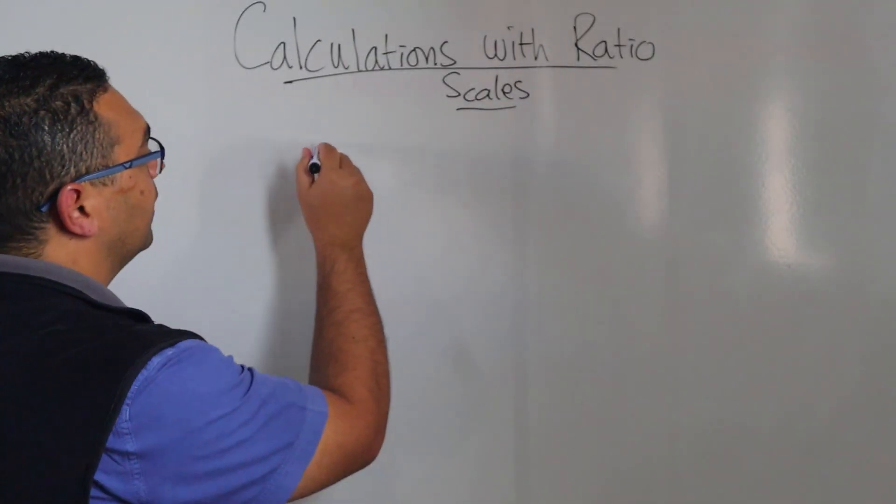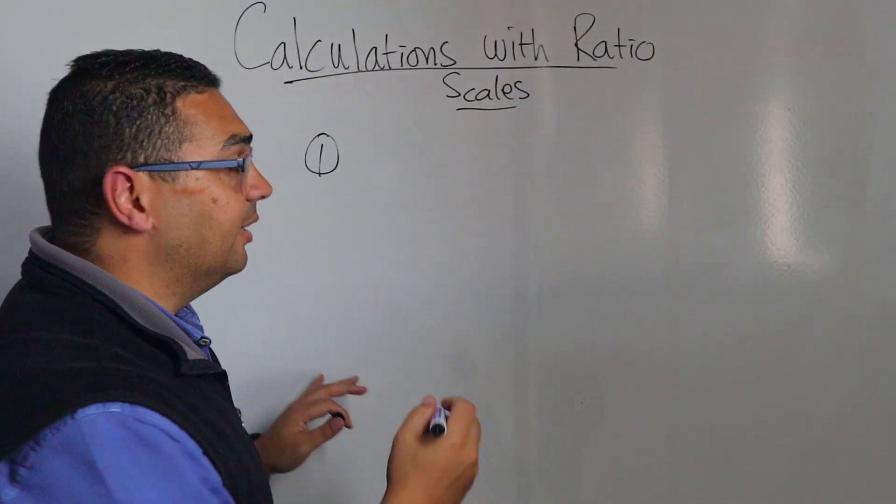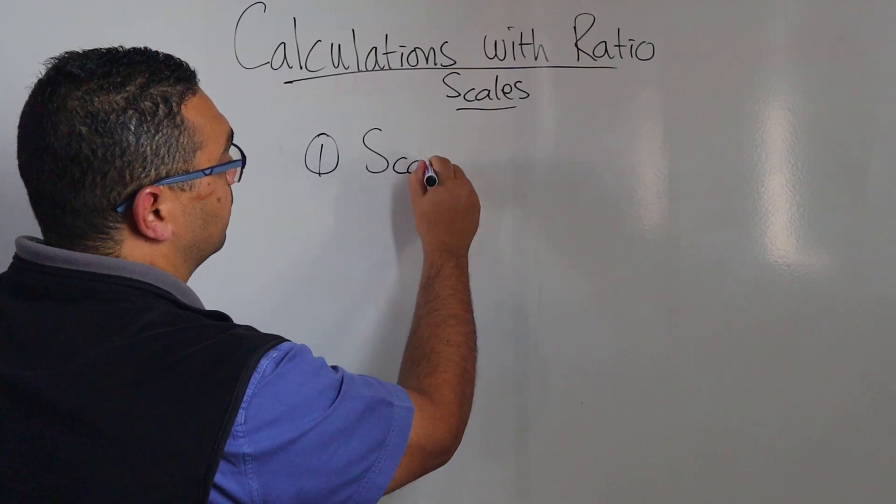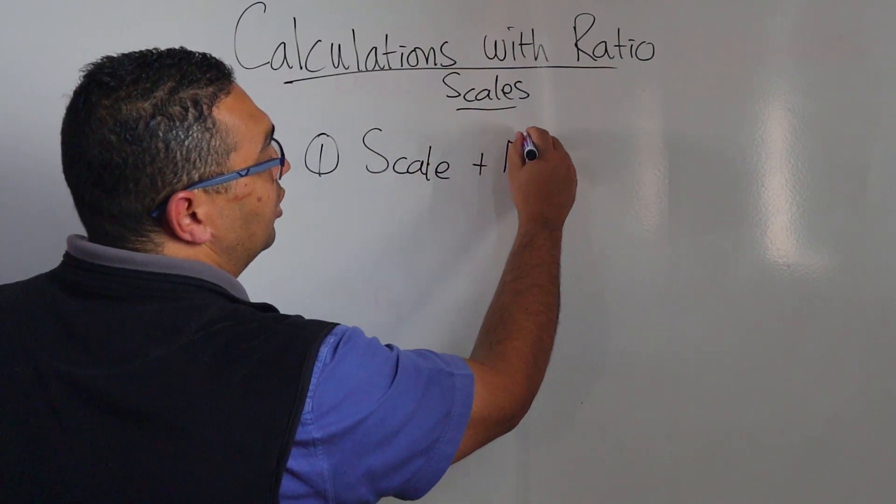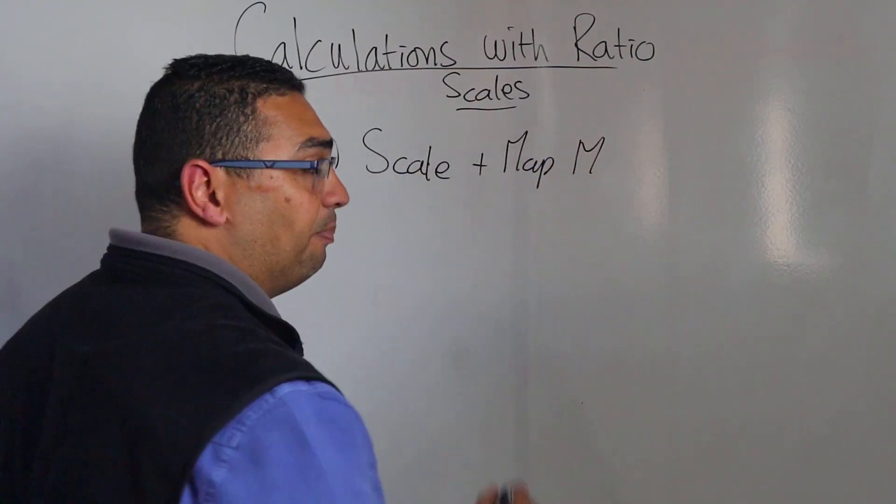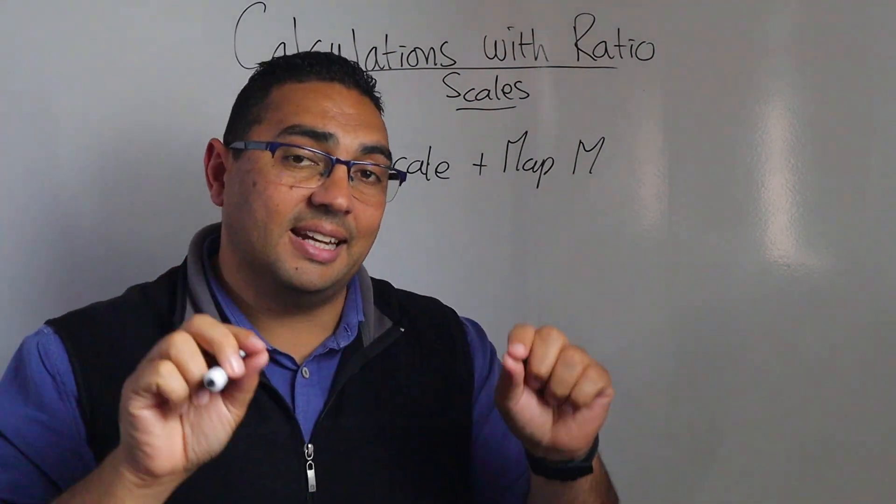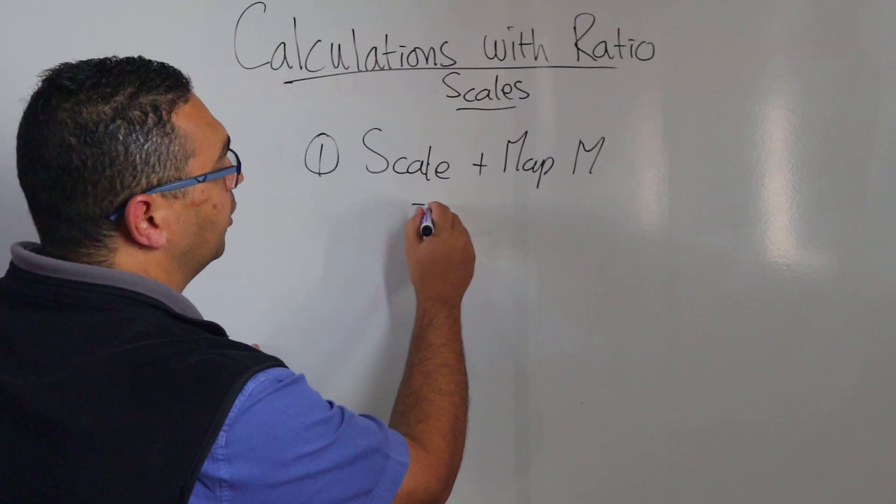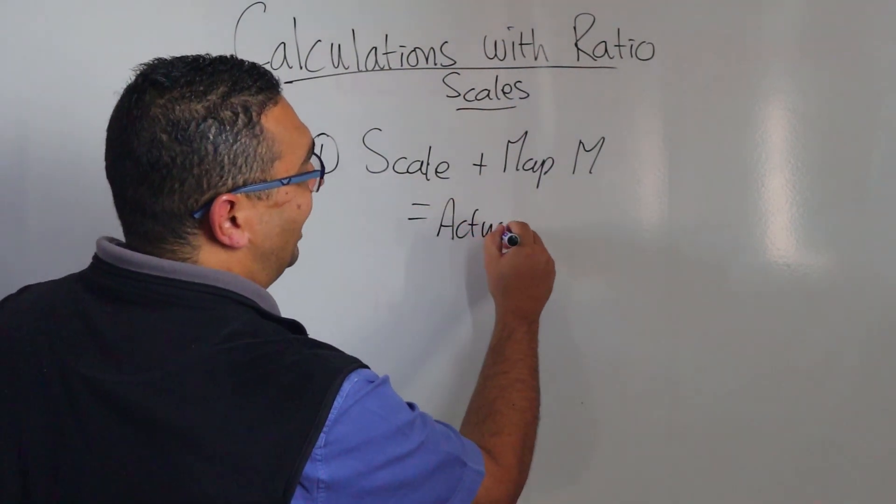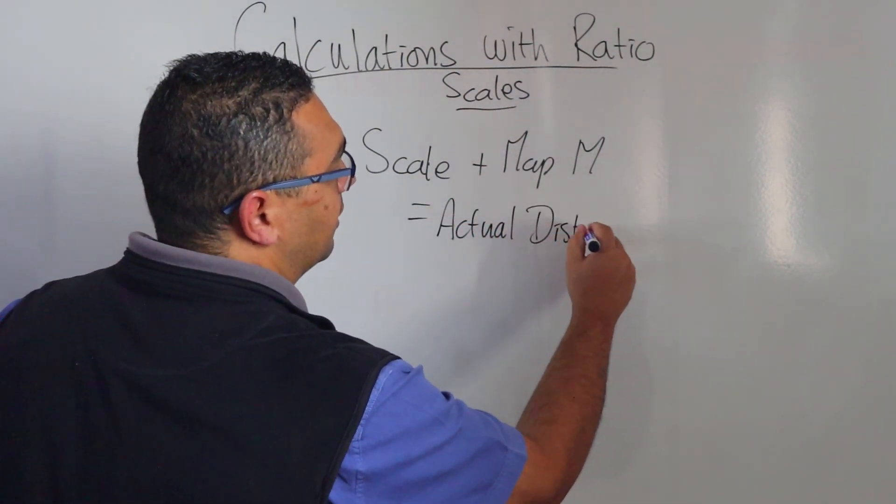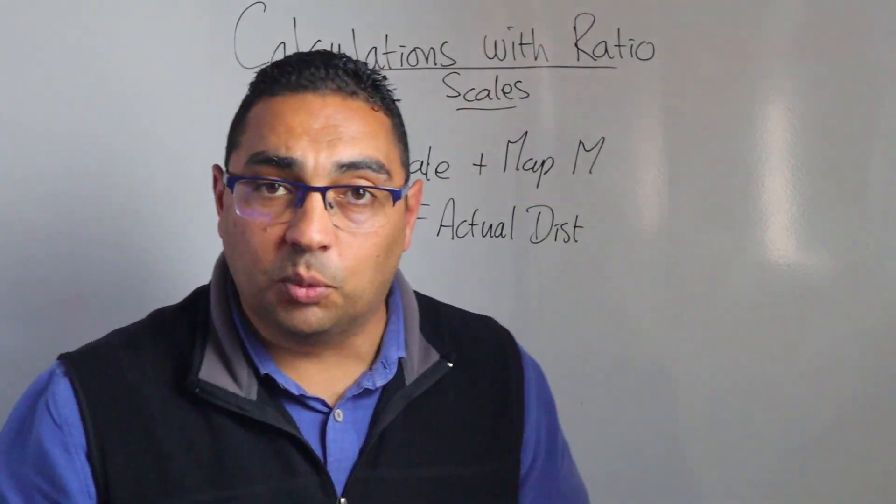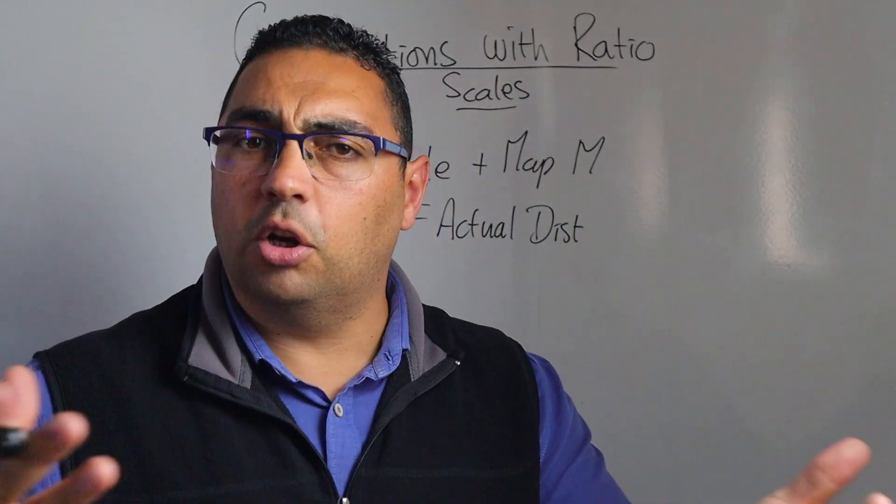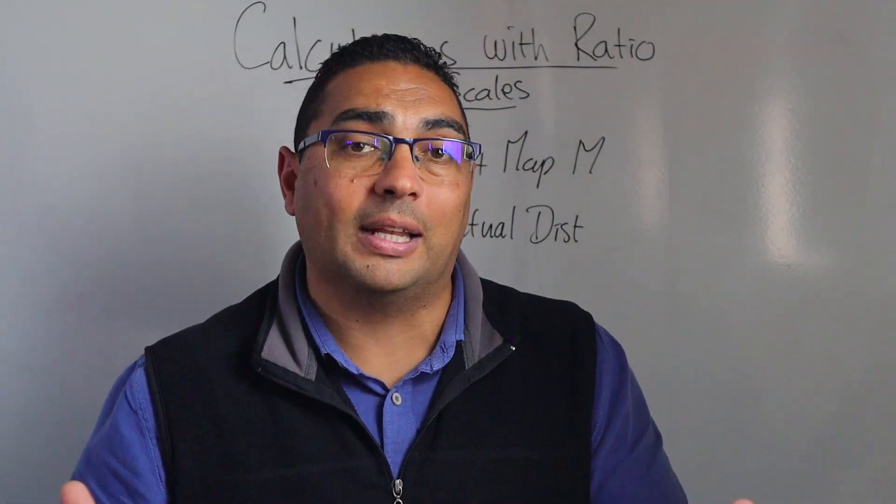Now the first one is where you are given the scale and you are given the map measurement, in other words how many centimeters it's measured on the map. What do they want from you? They want the actual distance. Now the actual distance is going to be in kilometers or meters, depends on what they actually want.